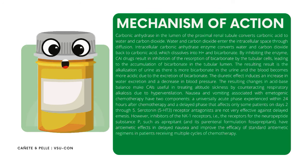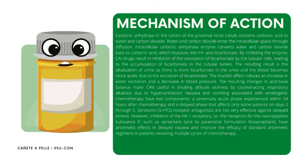This leads to accumulation of bicarbonate in the tubular lumen, resulting in alkalization of urine as there is more bicarbonate in the urine, and the blood becomes more acidic due to the excretion of bicarbonate. The diuretic effect induces an increase in water excretion and decrease in blood pressure. The resulting changes in acid-base balance make carbonic anhydrase inhibitors useful in treating altitude sickness by counteracting respiratory alkalosis due to hyperventilation. In the eyes, carbonic anhydrase inhibitors reduce the production of aqueous humor by the epithelium of the ciliary body, by decreasing the production of bicarbonate ions and possibly reducing the flow of fluids.